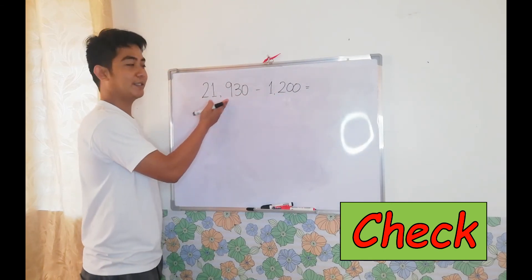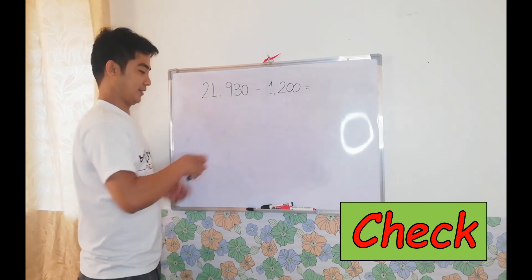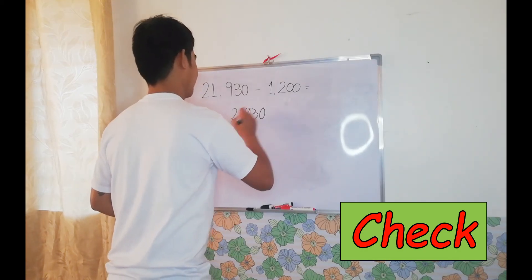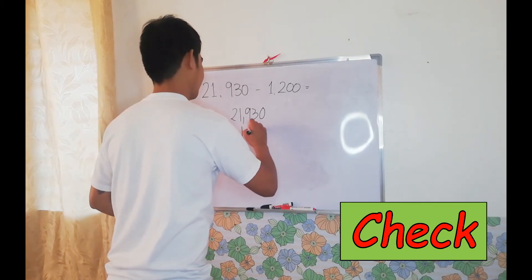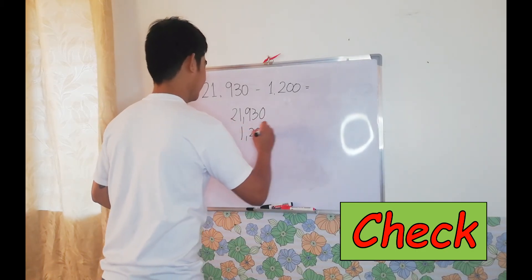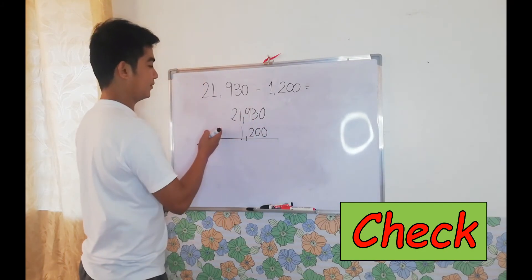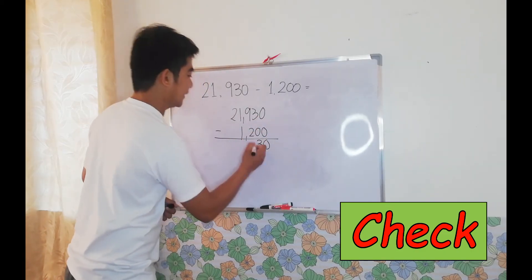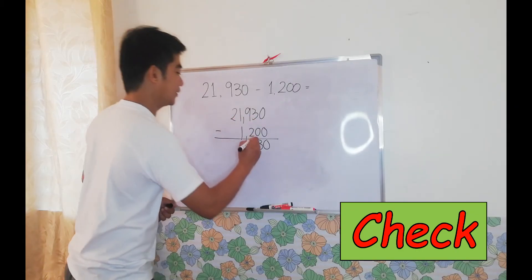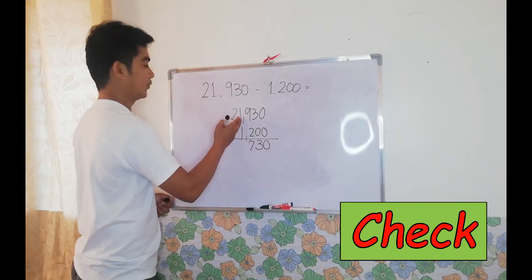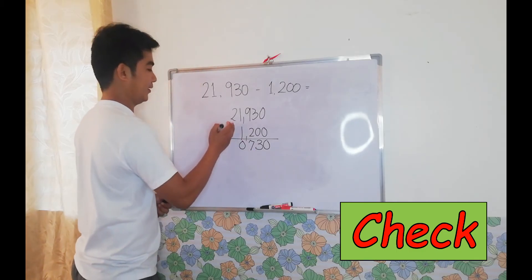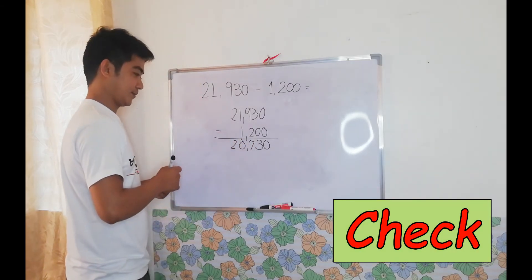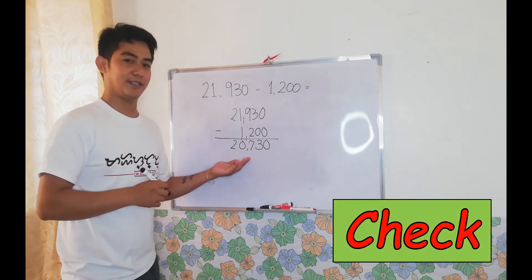We have 21,930 minus 1,200. 0 minus 0 is 0. 3 minus 0 is 3. 9 minus 2 is 7. 1 minus 1 is 0. Bring down 2. So we have 20,730.